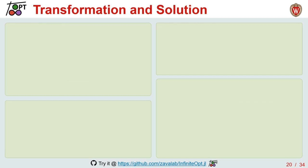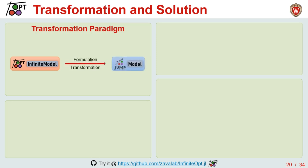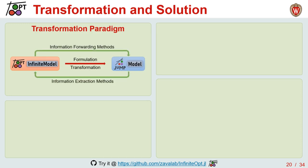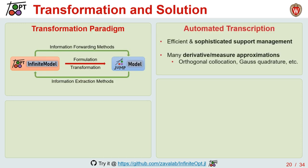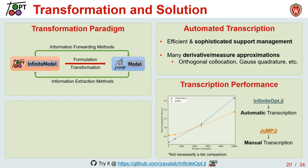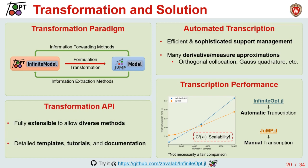Behind the scenes, the infinite model is solved following our transformation API: the infinite model is defined, transformed with a particular transformation into a finite JuMP model, which can then interact seamlessly with the infinite model. By default, we implement direct transcription, featuring a sophisticated support management system and a wide variety of derivative and measure approximations. I also want to highlight performance: when comparing automatic transcription in InfiniteOpt to manual transcription in JuMP, InfiniteOpt scales quite competitively. Moreover, this API is fully extensible and allows diverse methods like the method of weighted residuals to be implemented, with detailed templates, tutorials, and documentation.